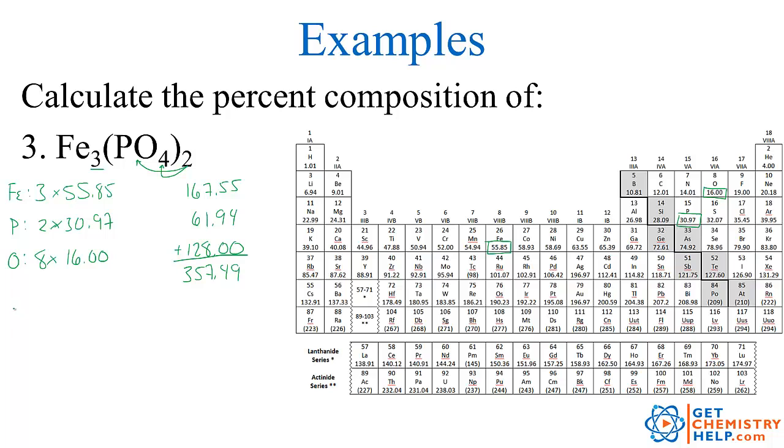So that means the percentage of iron by mass is equal to the total mass of iron, which was 167.55, divided by the total mass of the compound, which we just found was 357.49. And then, of course, because it's a percentage, we have to multiply by 100. So it's 46.868% iron by mass.